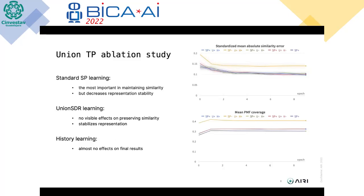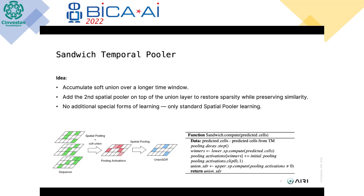In our ablation study of these learning rules, we found that the standard Spatial Pooler learning is the most important for maintaining similarity on the output, but it also decreases representation stability because the Spatial Pooler tries to increase entropy on its output to make all neurons participate. The other two learning rules are used to stabilize the output sequence and have almost no effect on preserving similarity.